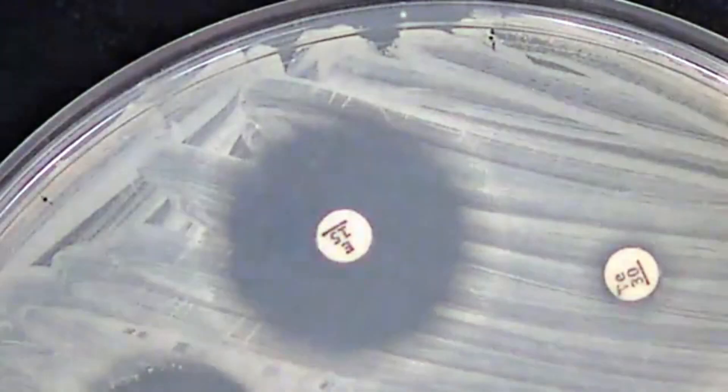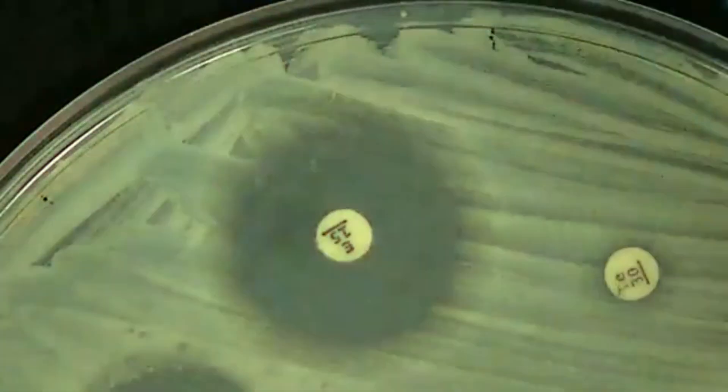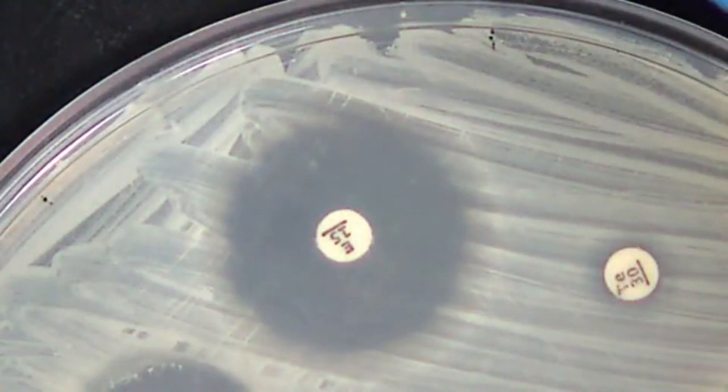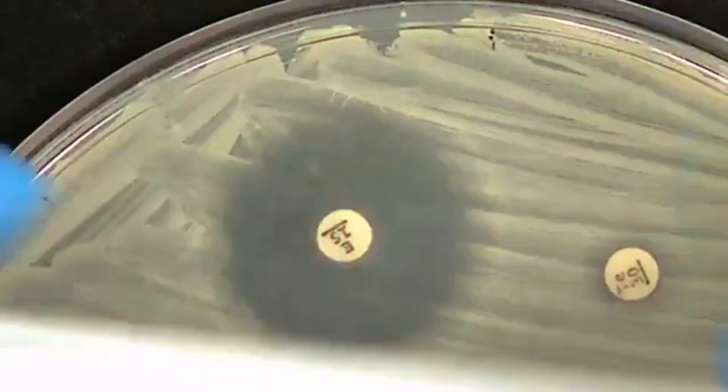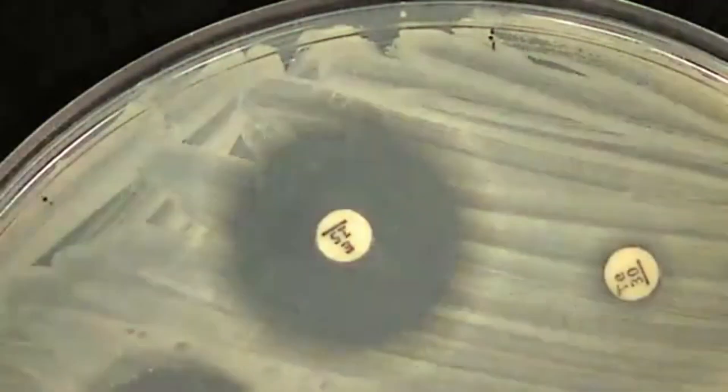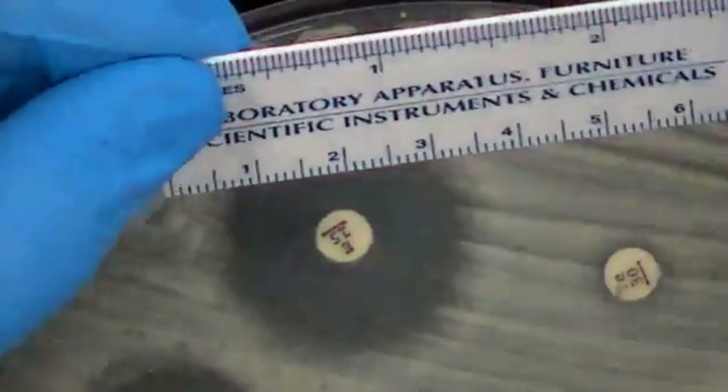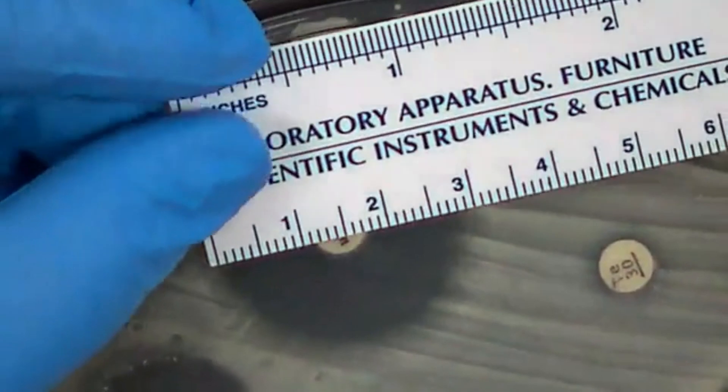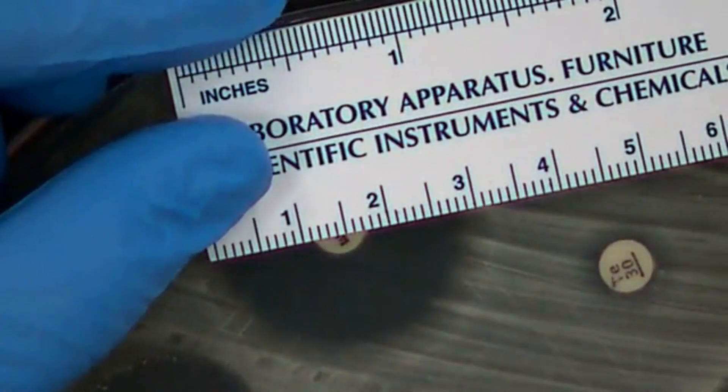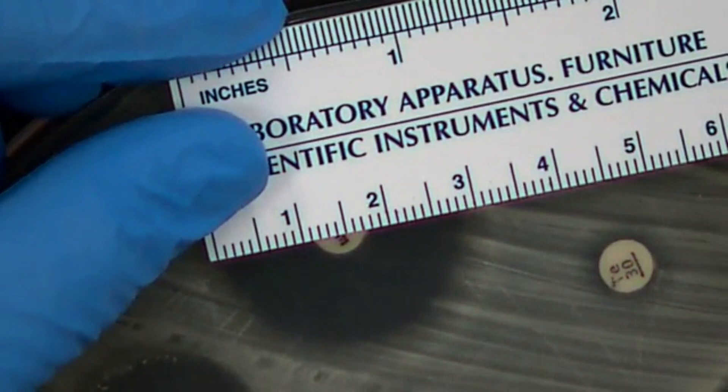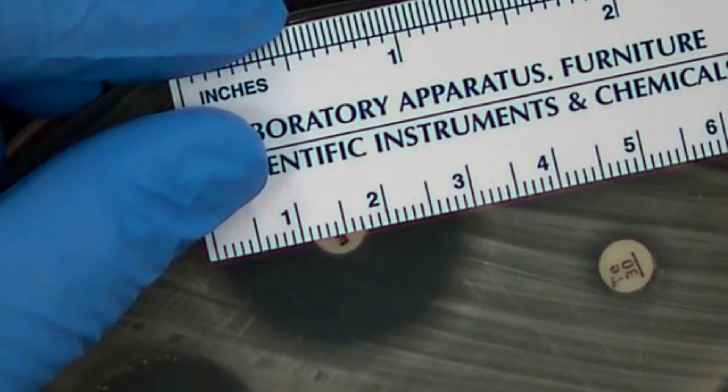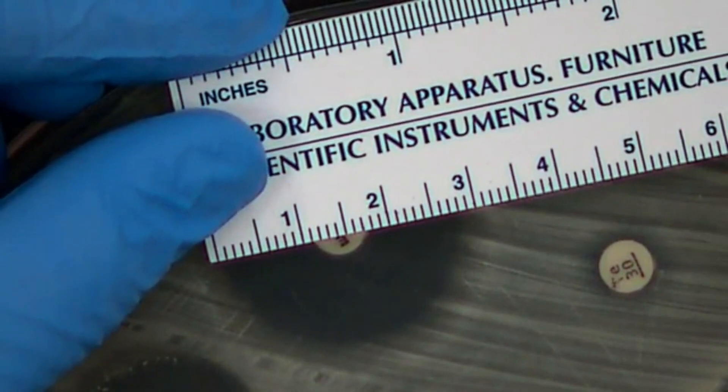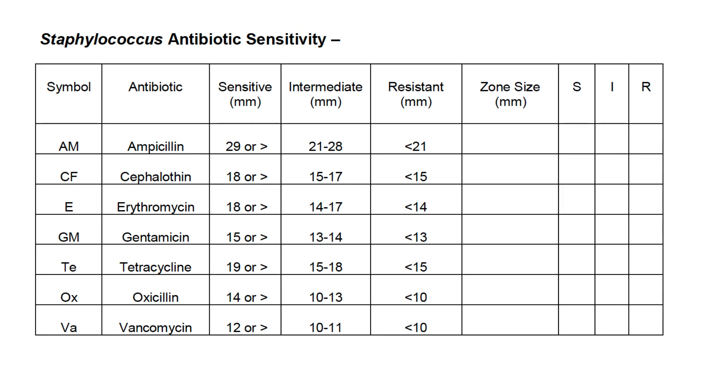The first disc we're going to measure has the letter E on it, which is for erythromycin. So we're going to use the ruler, and using the metric side, we're going to determine how many millimeters it is to reach the entire width of that zone. So this zone of inhibition is about 28 millimeters, and so now we want to take that information and see if the bacteria is sensitive, intermediate, or resistant.